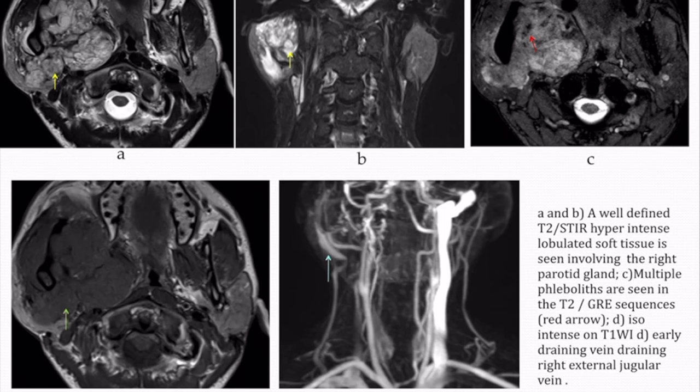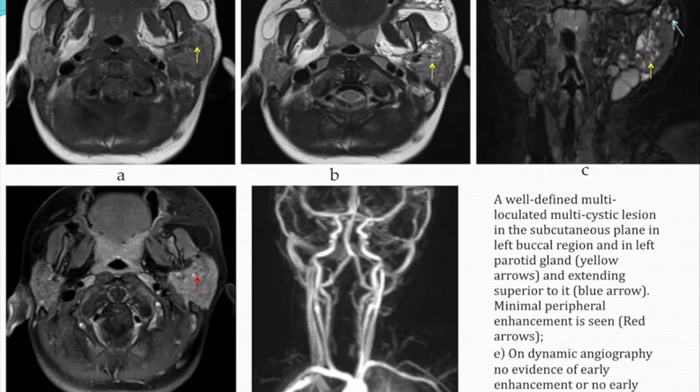A well-defined T2-STIR hyperintense lobulated soft tissue lesion involving the right parotid gland was seen. Multiple flea-bite lesions were seen on GRE sequences. The lesion appeared hypo- to iso-intense on T1-weighted images, and an early draining vein running into the external jugular vein was identified. The diagnosis given was slow-flow venous malformation, based on the early draining vein.